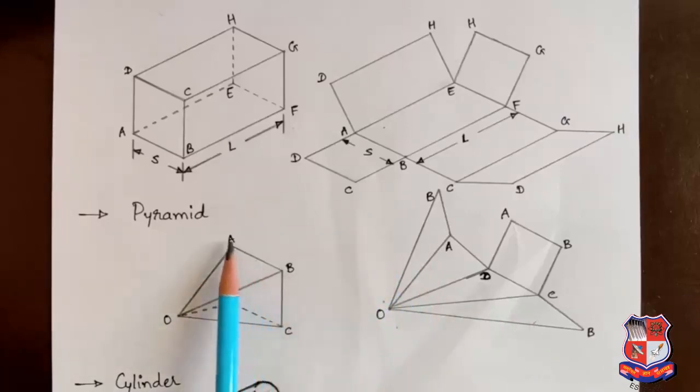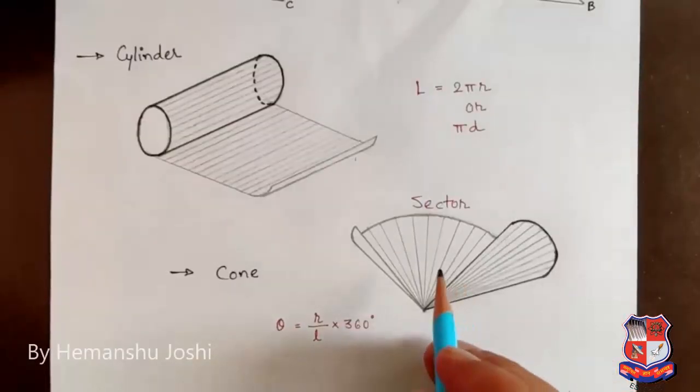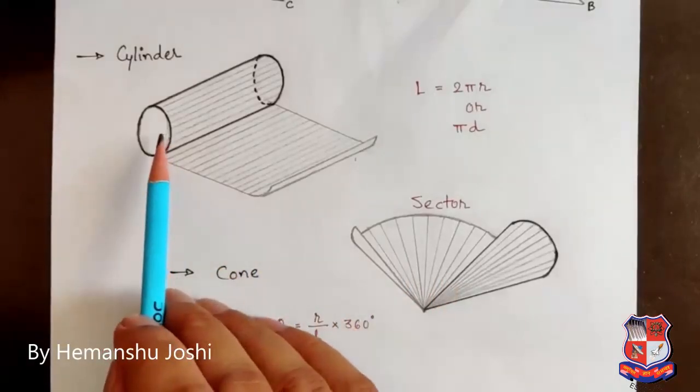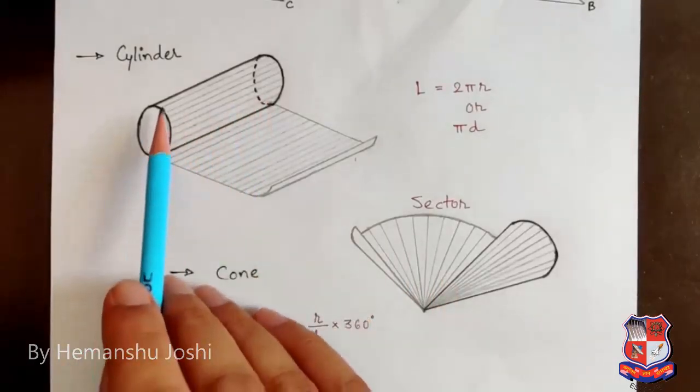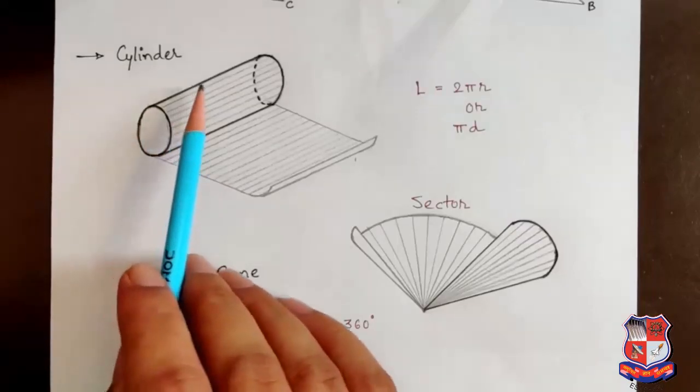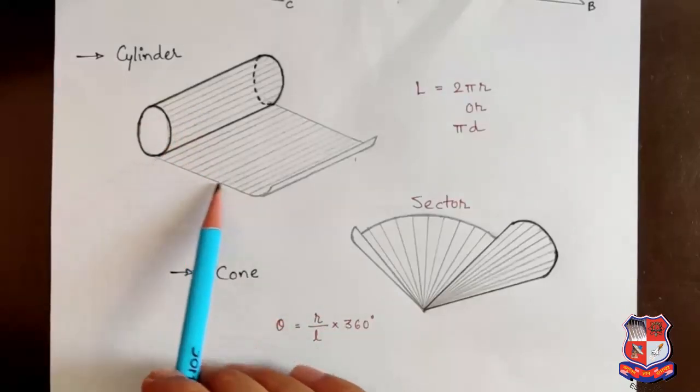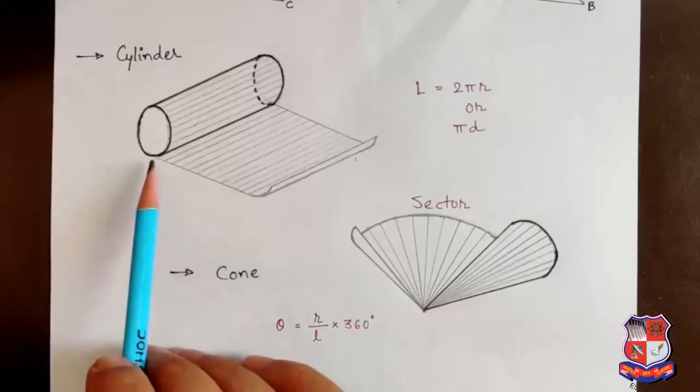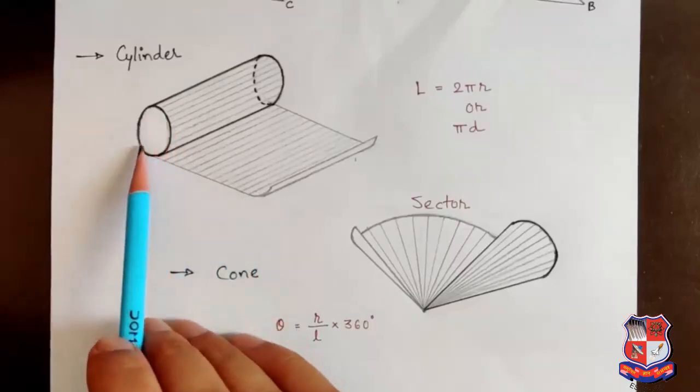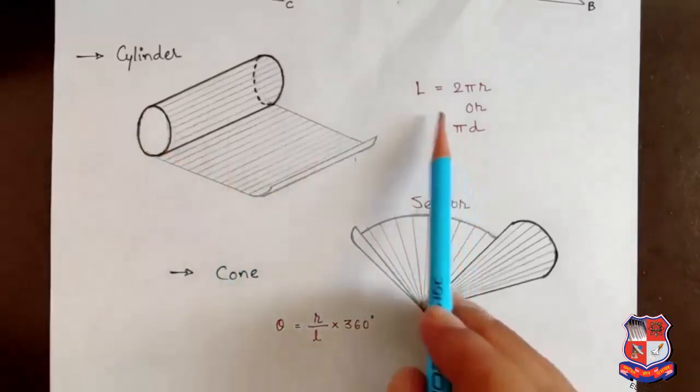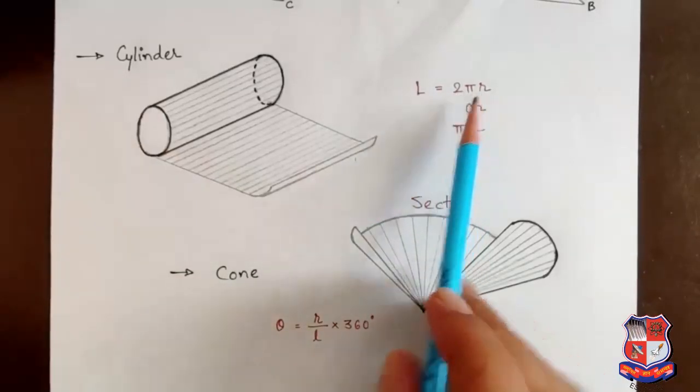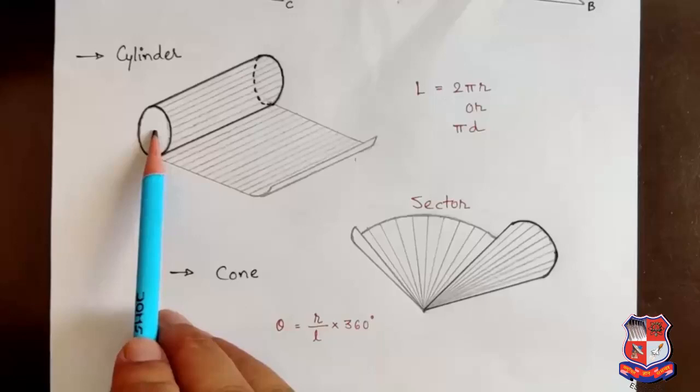Our next object is cylinder. We know that cylinder's top and bottom surfaces are circular and this side is the curved side. This rectangle shape will be developed. The length is the circumference of the base circle, which means L equals 2πr, where r is the cylinder radius.